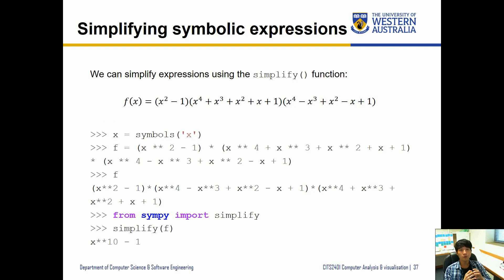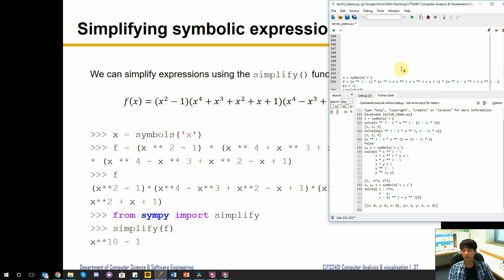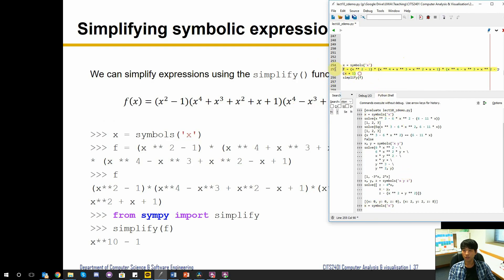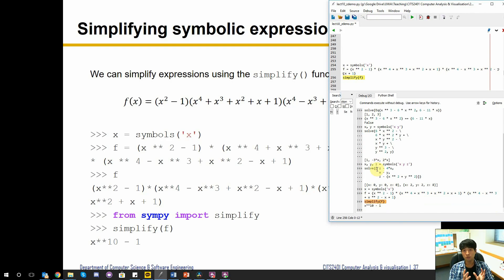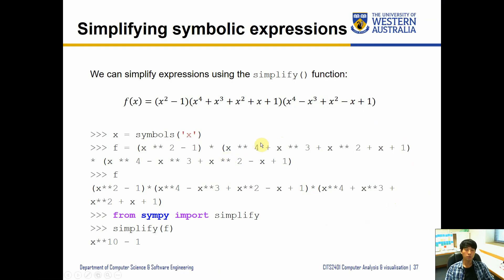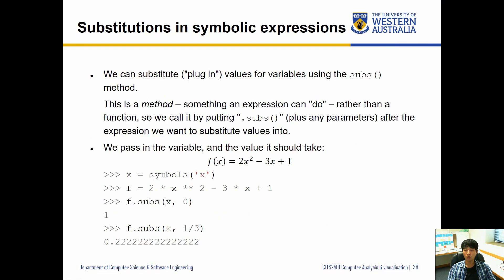SymPy also provides a simplify function for symbolic expressions. If we have a very complicated-looking function and encode it with x as a symbol, we can call simplify(f) from the SymPy library. It will show the shortened form after simplifying as much as possible. This complex equation actually comes down to 10^(x-1). These tools help with complicated expressions to see whether they can be simplified further.